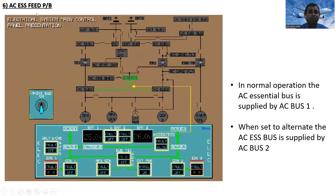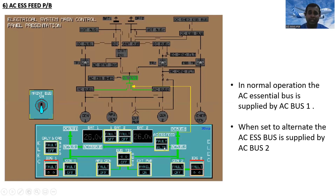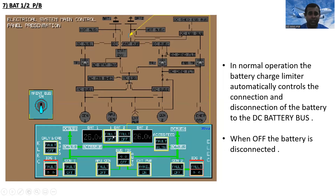Next is the AC essential feed push button. In normal operation, the AC essential bus is supplied by AC bus 1. When set to alternate, the AC essential bus is supplied from AC bus 2 — meaning when we push this push button to alternate mode, the AC essential bus is supplied from AC bus 2.